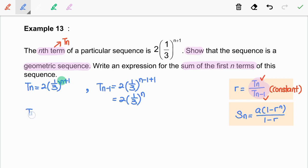Now, we take tn divided by tn-1. Rewrite this part, which becomes 1 over 3 to the power of n times 1 over 3 to the power of 1.